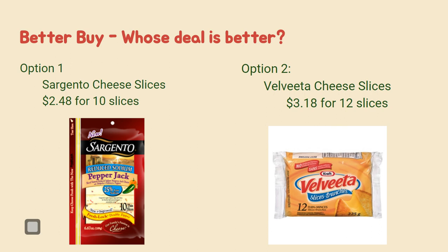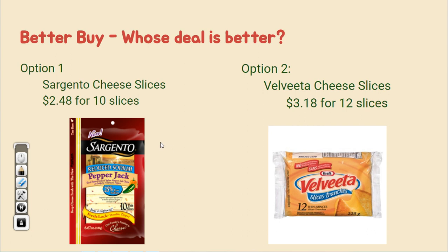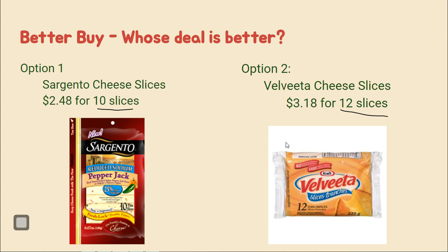We're looking at two different types of cheeses here, and if we weren't worried about the brand and just want to make sure we're getting the most for our money, we're going to need to use Better Buy and unit rate to help us figure out whose deal is better. We have 10 slices for a little less money, and a little bit more money but you get more as well. So sometimes it's hard to tell which one's better — you pay less but get a little less, or pay more but get more. To really compare, we need to use unit rate.